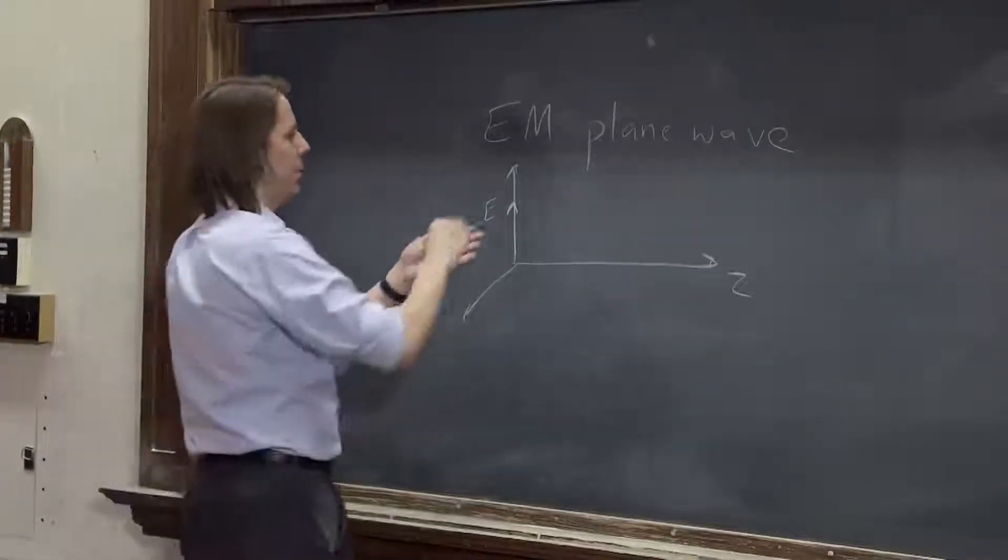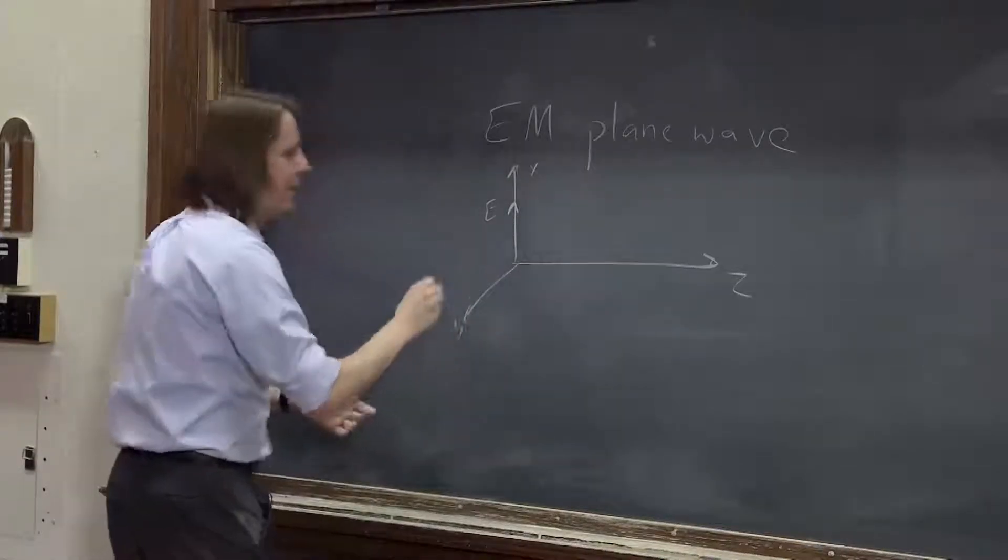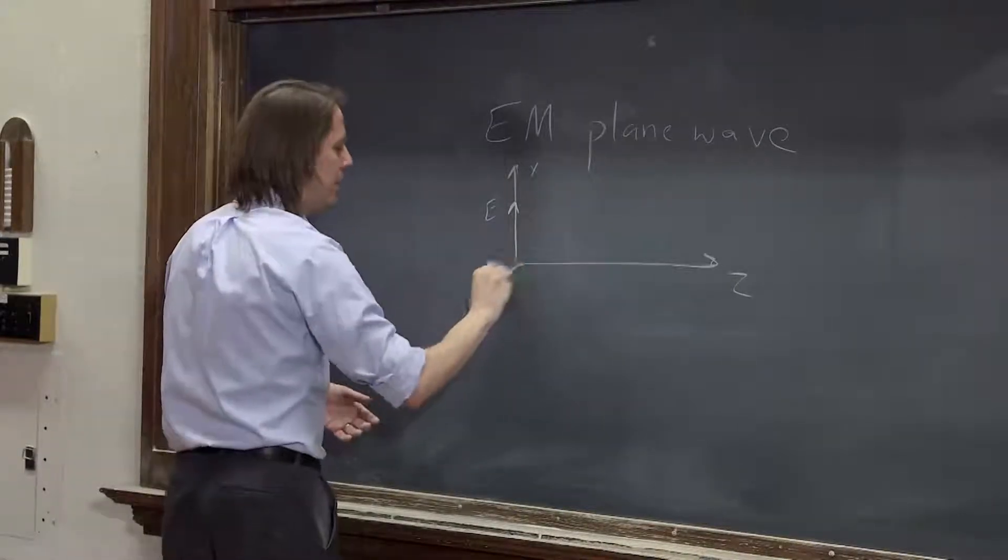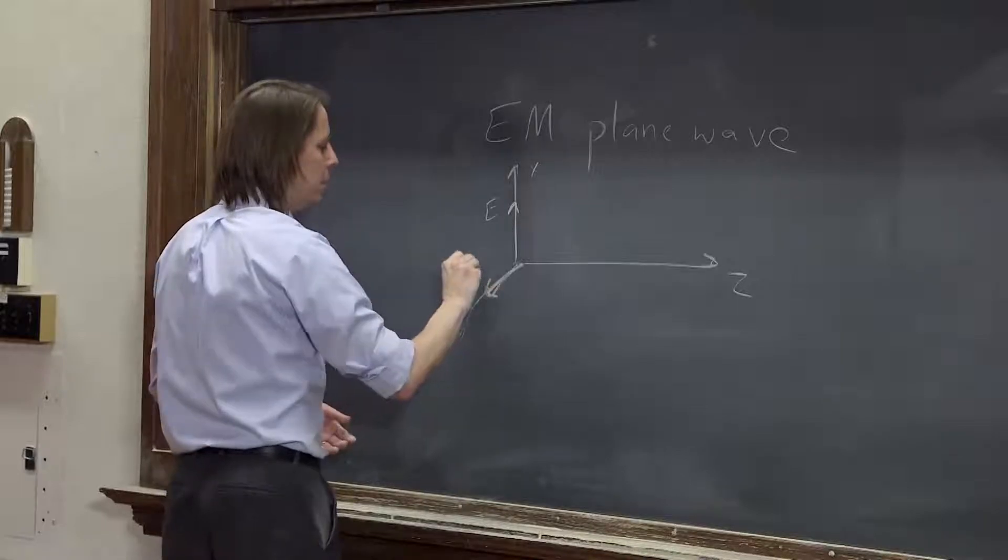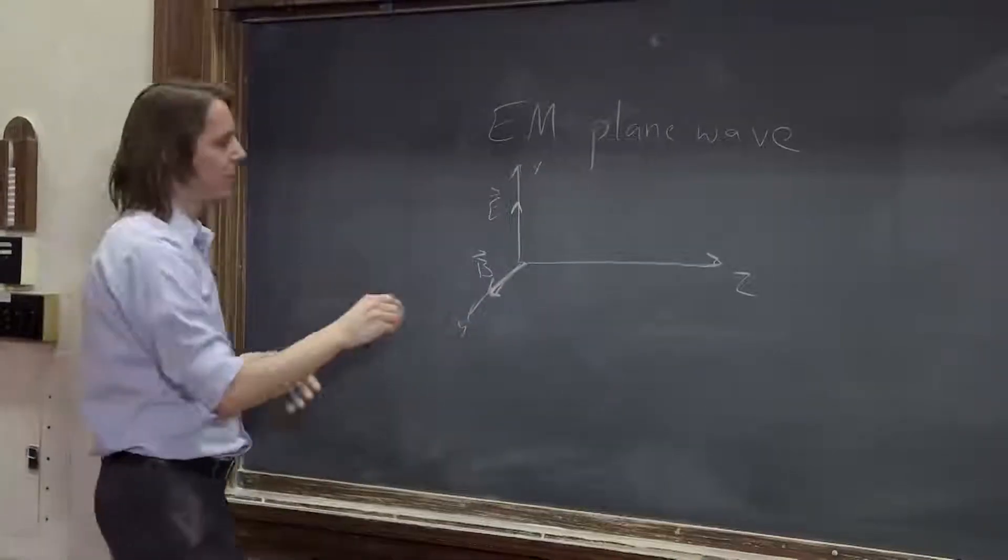Yeah, this is y. If it might have its E field along the x and its B field along y.